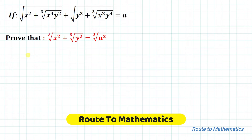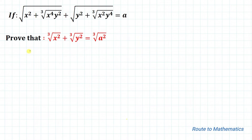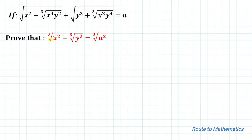Hello everyone, welcome to Root to Mathematics. In this video we are going to solve an interesting Olympiad question. The given question is: if √(x² + ∛(x⁴y²)) + √(y² + ∛(x²y⁴)) = a, then prove that ∛x² + ∛y² = ∛(a²).